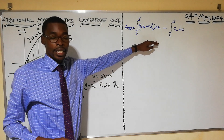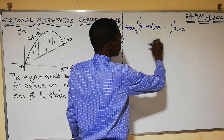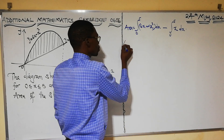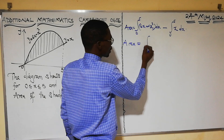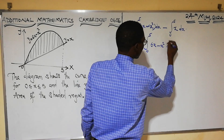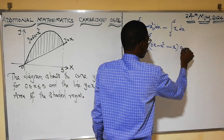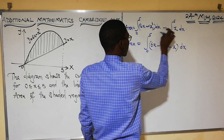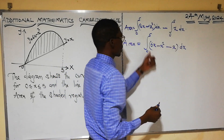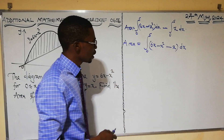One of the properties of integration is that since we have the same limits — integrating from 0 to 5 in both cases — and we have a difference of these integrals, we can combine them into one: the integral from 0 to 5 of (6x − x²) − x with respect to x. Instead of integrating them separately, we form one function and get the integral.